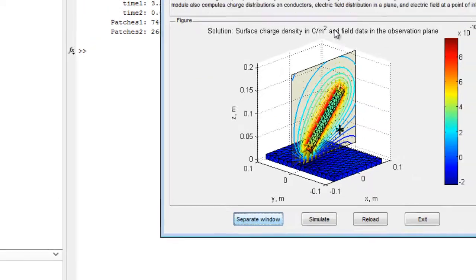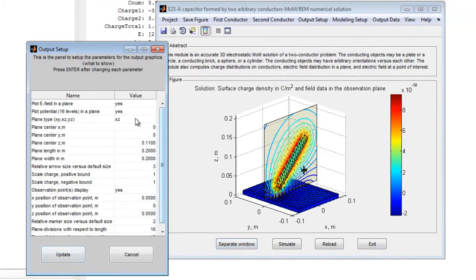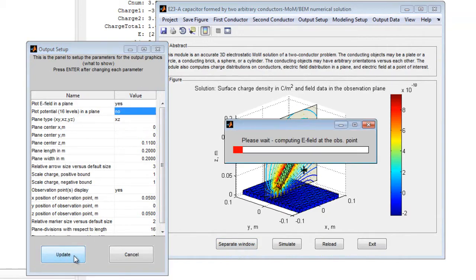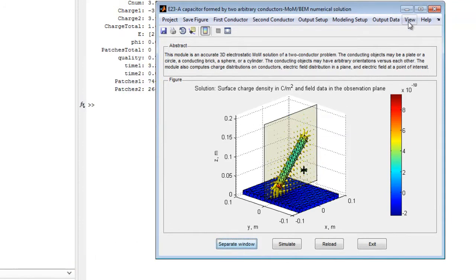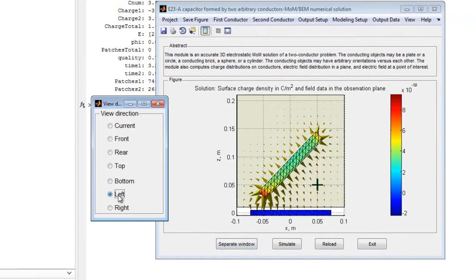The field strength is represented by different sized arrows. A green cross indicates an observation point in space where numerical values of the potential and the electric field will be displayed in the output data menu. Using the view menu changes the view angle according to several predefined formats.